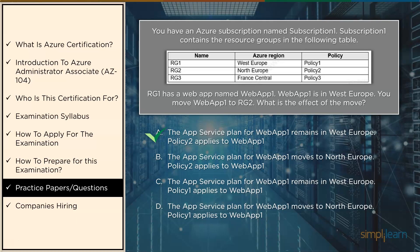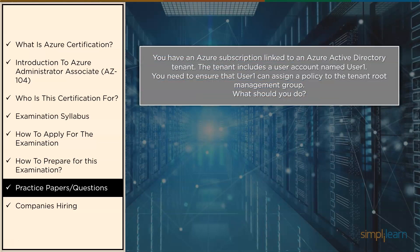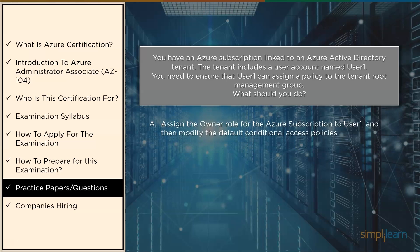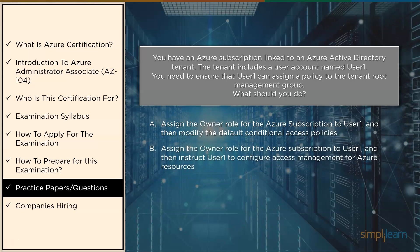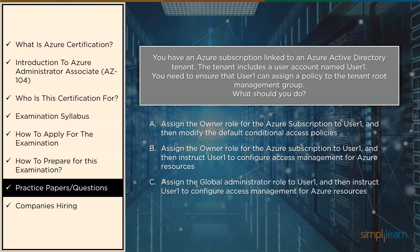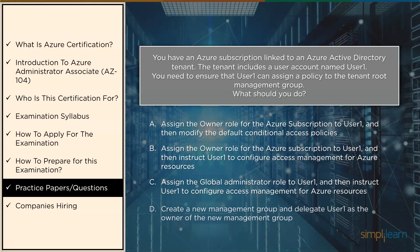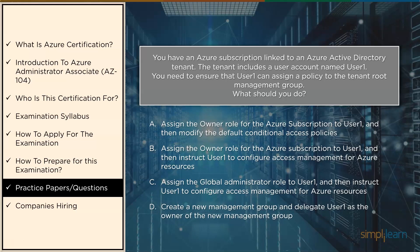The third question: you have an Azure subscription linked to an Azure Active Directory tenant. The tenant includes a user account named user one. You need to ensure that user one can assign a policy to the tenant root management group. What should you do? Options: A) assign the owner role for the Azure subscription to user one and modify the default conditional access policies; B) assign the owner role for the Azure subscription to user one and then instruct user one to configure access management for Azure resources; C) assign the global administrator role to user one and instruct user one to configure access management for Azure resources; D) create a new management group and delegate user one as the owner of the new management group. The correct answer is option B.